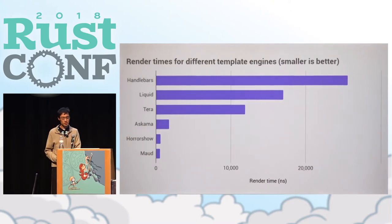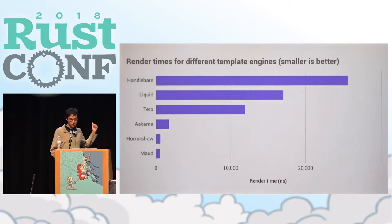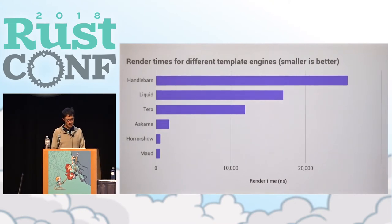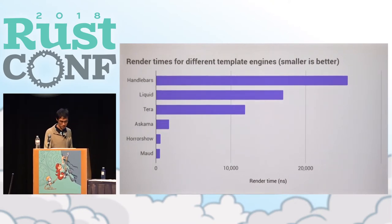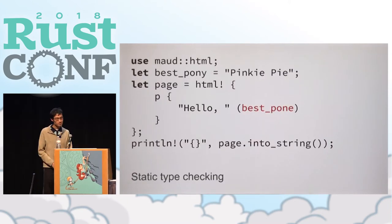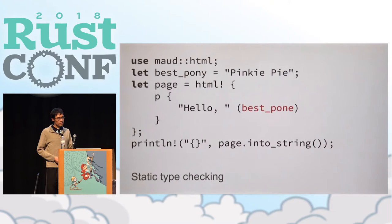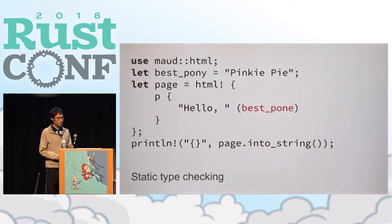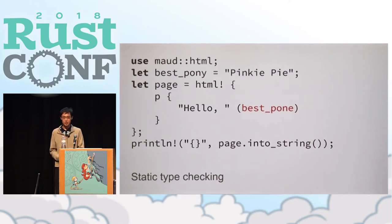So in the real world, most of the time the speed of your template engine doesn't matter that much. But I think it's still cool that we can create something that efficient. Another advantage of Maud is static type checking — and in fact I think this is the more important advantage.